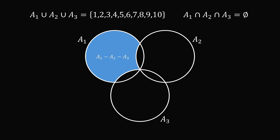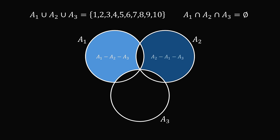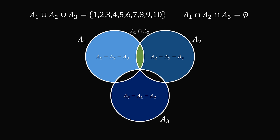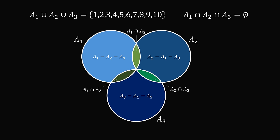So how many regions are there? We have one region which is A1 minus A2 minus A3. Another region is A2 minus A1 minus A3. A third region is A3 minus A1 minus A2. Then we have the intersection of A1 and A2, the intersection of A1 and A3, and the intersection of A2 and A3. This makes for a total of six regions.